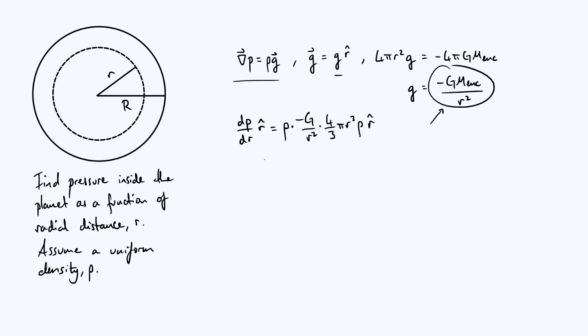Then of course we can just ignore the r̂ vectors because they appear on both sides, as of course they have to, and simplify everything to get dp/dr is minus 4πGρ² divided by 3, and then multiplied by r.